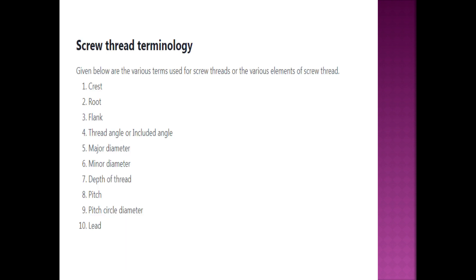Now we will learn the terminology of screw threads. The terms we will cover are: crest, root, flank, thread angle, major diameter, minor diameter, depth of thread, pitch, pitch circle diameter, and lead.